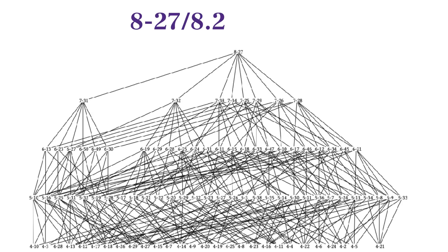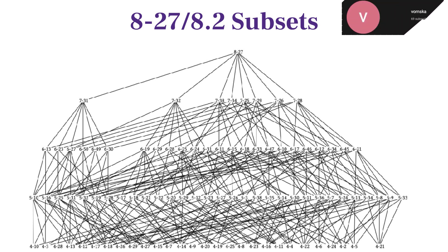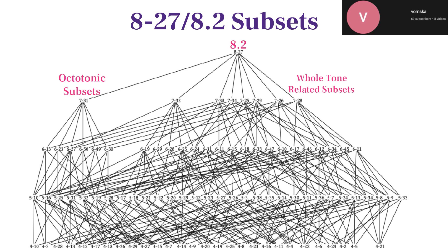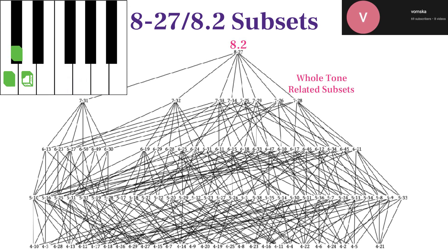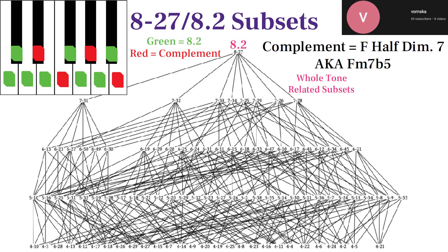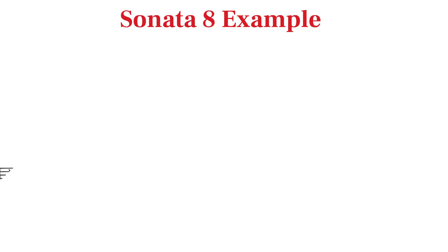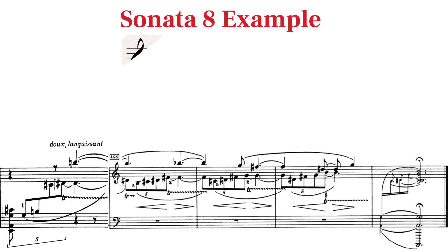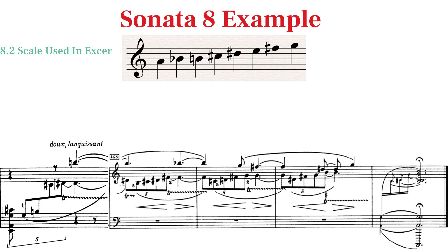It has so many subsets that a Haas diagram was needed to show all the connections between its subsets. Big thanks to Vornska for making these charts! The diagram shows 8.2's octatonic subsets on the left side and the mystic whole-tonish sets on the right side. The complement of this set, which is the pitches not sounding, forms the half-diminished 7th chord set. Let's analyze the very end of Sonata 8, where we see a very similar melody to the one analyzed in Prometheus in the same key, with an added E giving us 8.2.